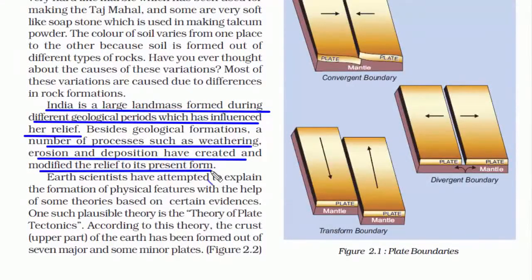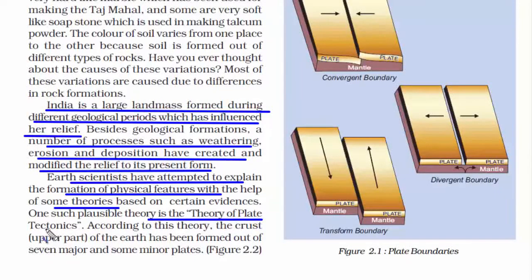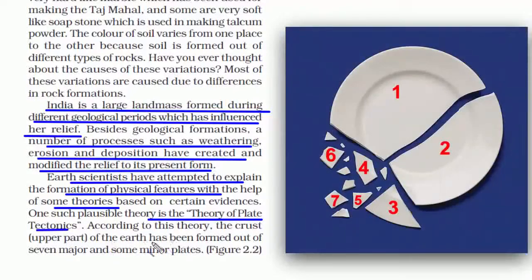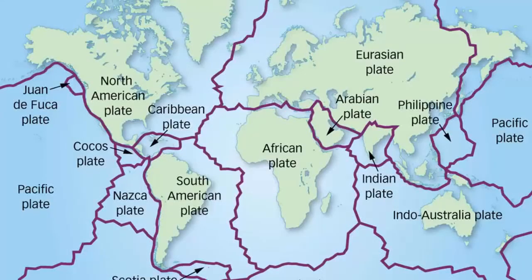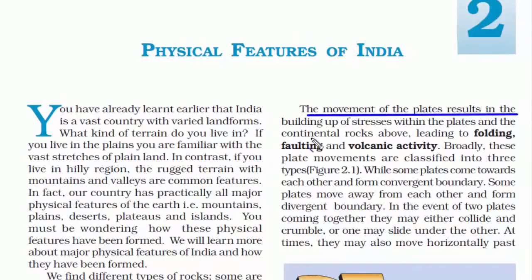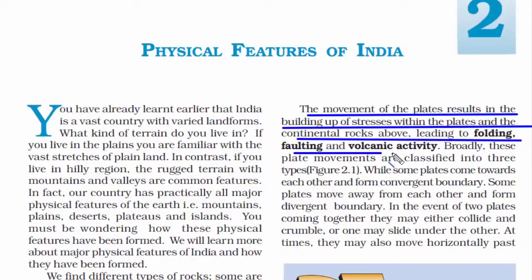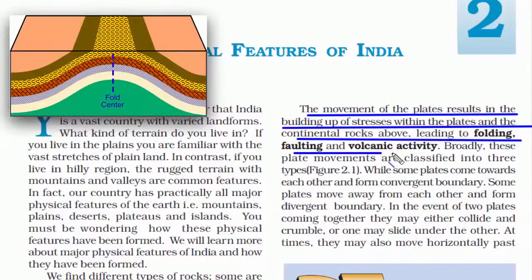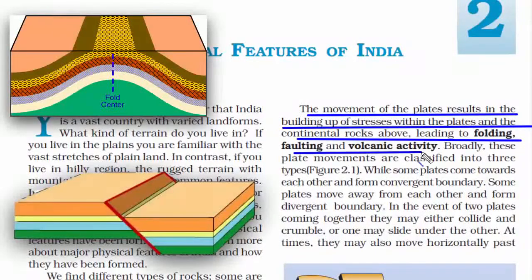The big question is how did humans come to know about these geological changes. Scientists have attempted to explain the formation of physical features with the help of theories. One such theory is the theory of plate tectonics. This theory says the crust — the upper part of the earth — has been formed out of seven major and some minor plates. When these plates move, they build up stress, and the rocks above collide, or large chunks of soil get separated, leading to folding, faulting, and volcanic activity.